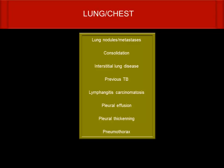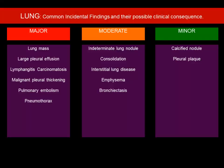In the lung and chest, you need to look for lung nodules, consolidation, interstitial lung disease, previous tuberculosis, pleural effusion, pleural thickening, and pneumothorax. How do you classify them into severe, moderate, and mild? If it's a major finding — a lung mass — it should be documented and reported.